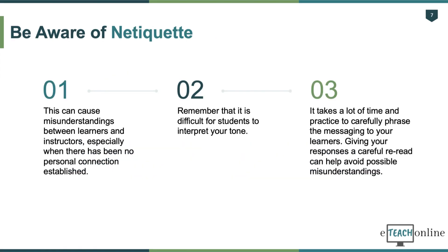Number six: be aware of netiquette. Online netiquette can sometimes be tricky and standards often change. This can cause misunderstandings between learners and instructors, especially when there has been no personal connection established. When communicating with your learners, remember that it is difficult for them to interpret your tone. A humorous comment can sometimes be misinterpreted as snappy or irritated. A quick and formal response can sometimes be read as cold. By giving all of your responses a careful reread, you can help avoid these possible misunderstandings.